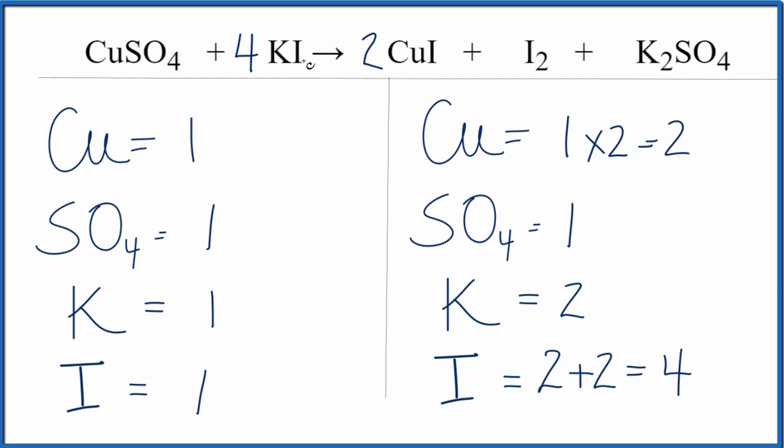So now we have iodine one times four. That equals four. The iodines are balanced. The potassium is one times four. That'll give us four of those. But we can fix that because we can double this.